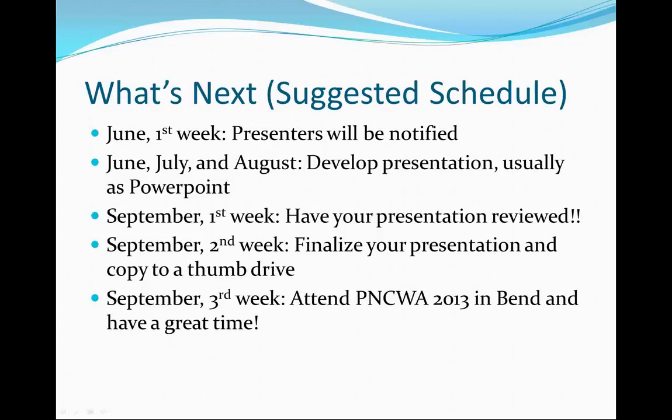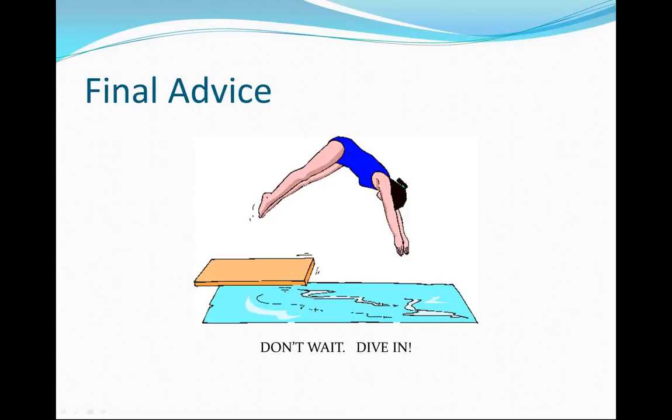What's next? Here is a suggested schedule. Presenters will be notified by the first week of June if their abstract has been selected. You then have June, July, and August to develop the presentation as a PowerPoint. During the first week of September, have it reviewed — get the technical and grammar reviews done. During the second week, finalize the presentation and copy it to a thumb drive. The third week of September is the conference in Bend, and you show up ready to go. My final advice: don't wait — dive in, take a stab at your abstract so somebody else can look at it and get thinking early. It's hard to put in a good abstract when you don't start writing until the day it's due. Thank you for watching.